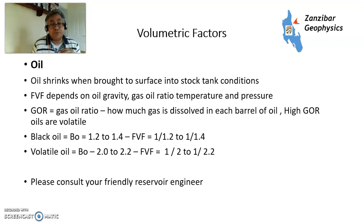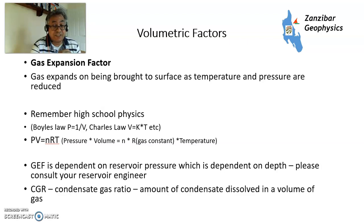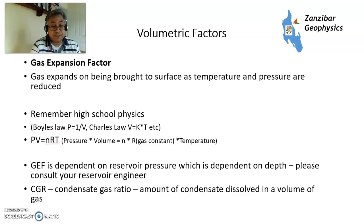For gas, if you recall from high school physics: Boyle's law states pressure is proportional to 1 over volume; Charles' law states volume equals a constant times temperature; and the ideal gas law is PV = nRT. The same principles apply when gas is brought to surface — it expands, and the expansion depends on the pressure difference between reservoir conditions and surface conditions, with temperature also playing a part. Consult your reservoir engineer for an appropriate gas expansion factor. The condensate-gas ratio is the amount of condensate dissolved in the gas — liquids drop out when brought to surface, and with a rich condensate there can be quite a lot of valuable liquid.